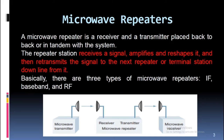Microwave repeaters: A microwave repeater is a receiver and a transmitter placed back-to-back or in tandem with the system. The repeater station receives a signal, amplifies and reshapes it, and then retransmits the signal to the next repeater or terminal station down line from it. Basically, there are three types of microwave repeaters: IF, baseband, and RF.